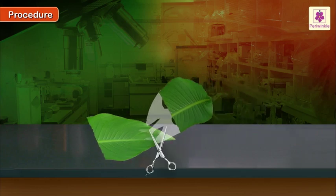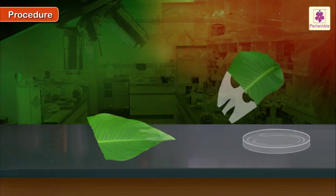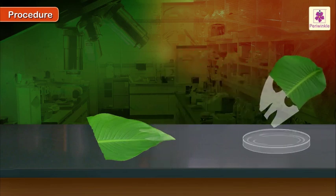Use a sharp pair of scissors to cut and trim the epidermal peel. Immediately place the peel in distilled water taken in a Petri dish.